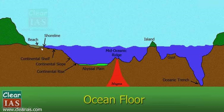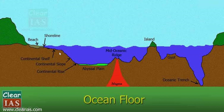Continents slope seawards from the coast to a point where the slope becomes very, very steep. This shallow submerged extension of the continent is called the continental shelf. The continental shelf is a source of fish, minerals, sand, gravel, petroleum, and natural gas. People mine in these areas for all these resources.